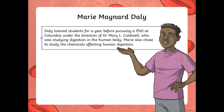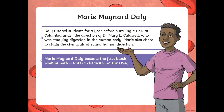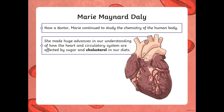At Columbia, under the direction of Dr. Mary L. Caldwell, who was studying digestion in the human body, Marie also chose to study the chemicals affecting human digestion. She was the first Black woman with a PhD in chemistry in the USA. Now a doctor, she continued to study the chemistry of the human body and made huge advances in our understanding of how the heart and the circulatory system are affected by sugar and cholesterol in our diets.